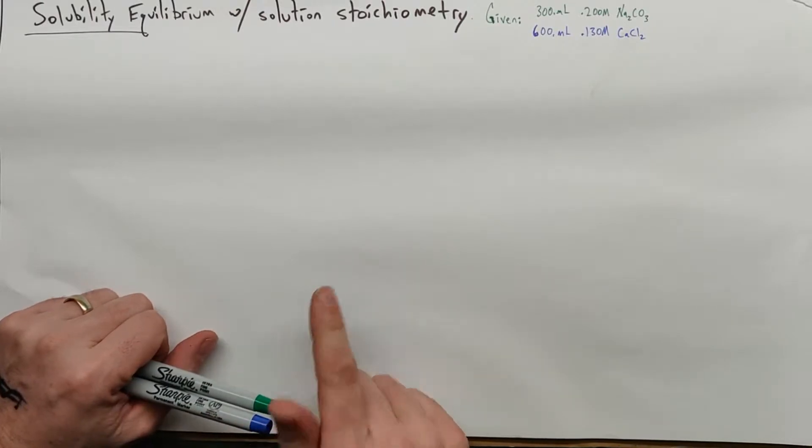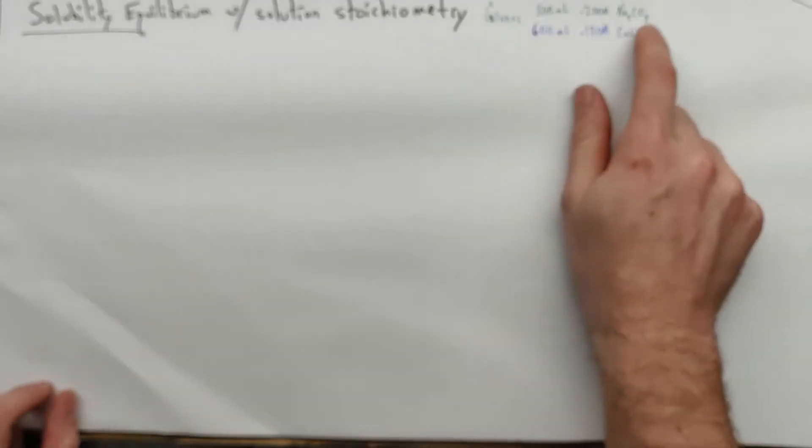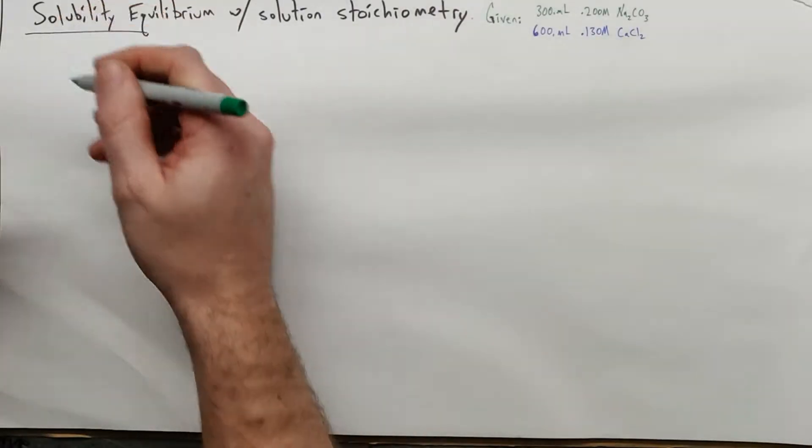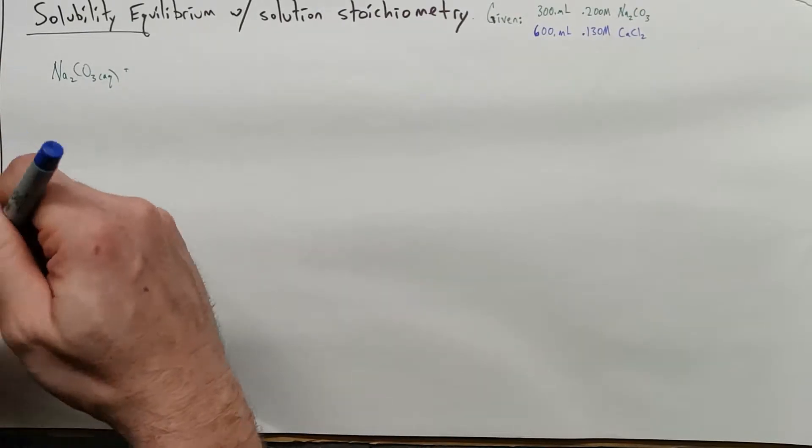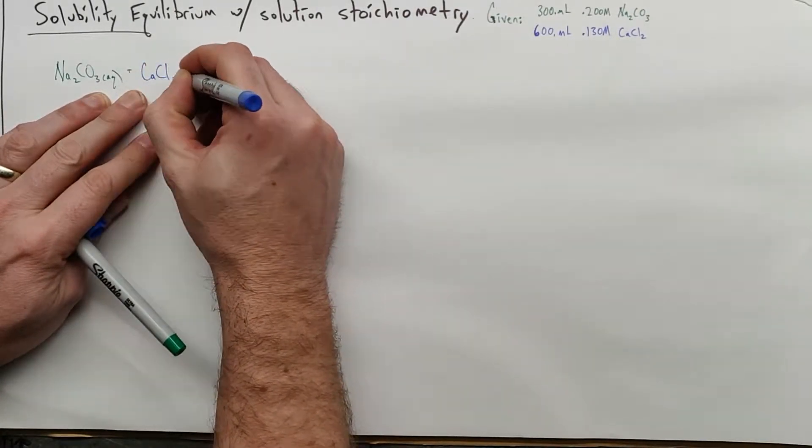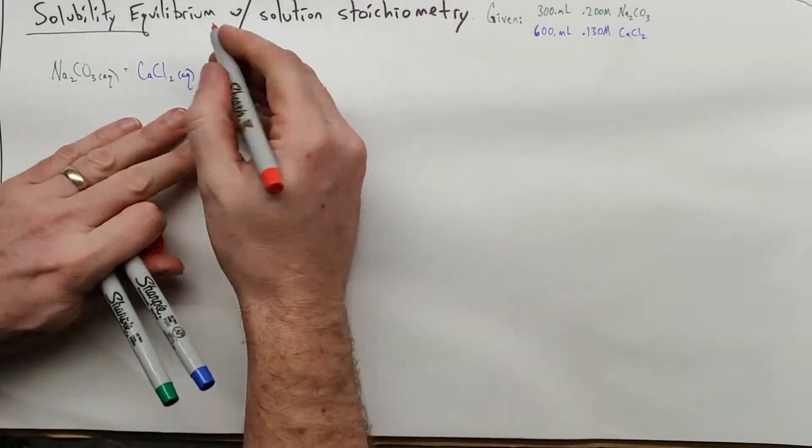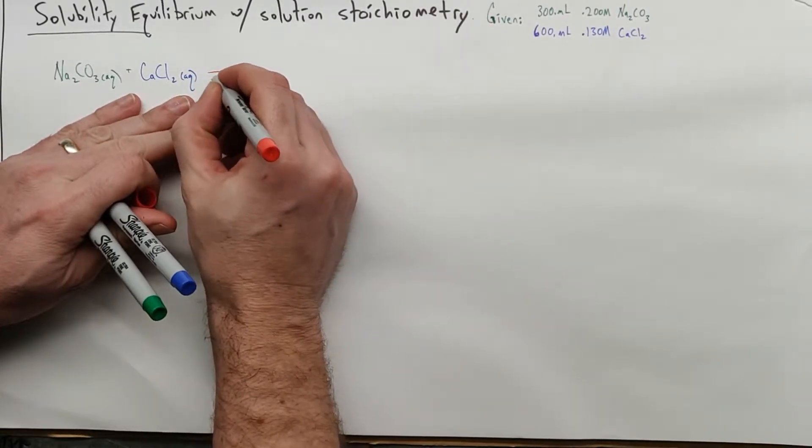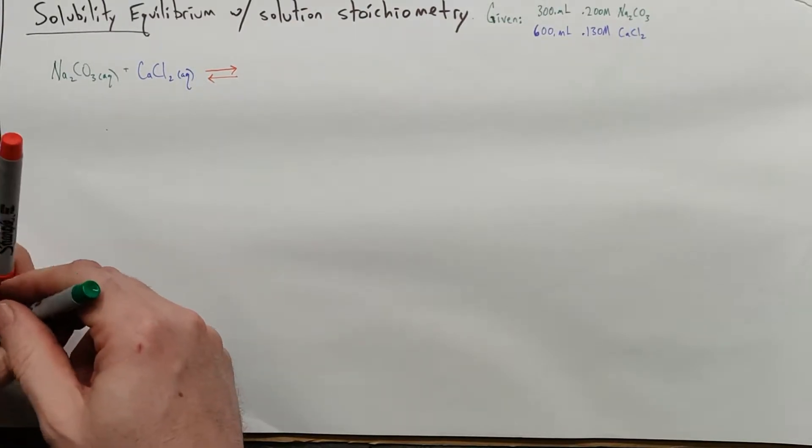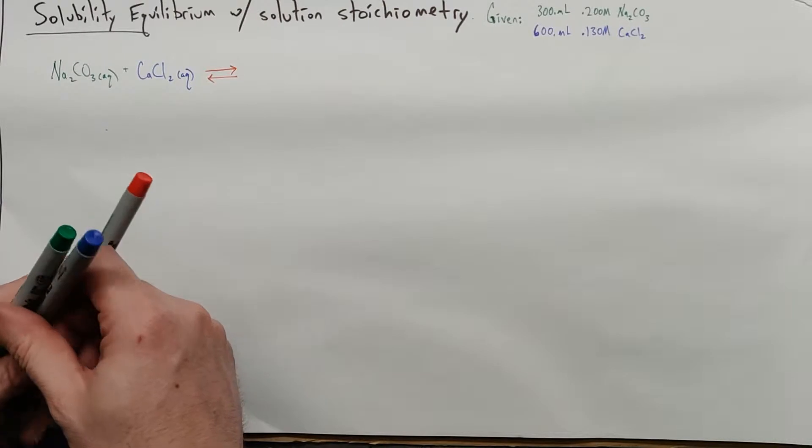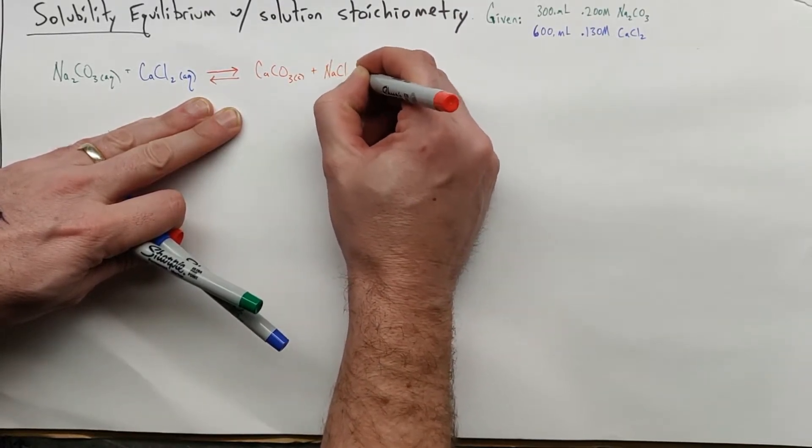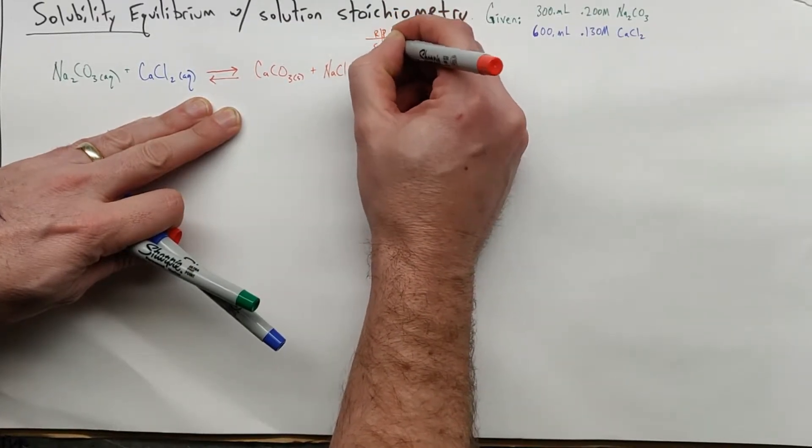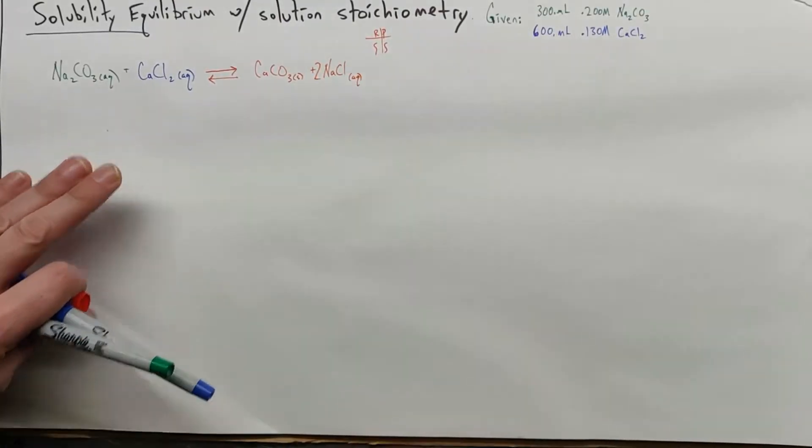When we have a reaction like in this case, we're going to have sodium carbonate and calcium chloride. Let's write that out. We've got sodium carbonate, aqueous solution, 300 mL of 0.2 molar, and we're going to add to that our 600 mL of 0.130 molar calcium chloride, and we will end up with calcium carbonate as a solid and sodium chloride as aqueous. We've got our table of reactants and products. I'm just going to put a 2 right there and it's balanced.